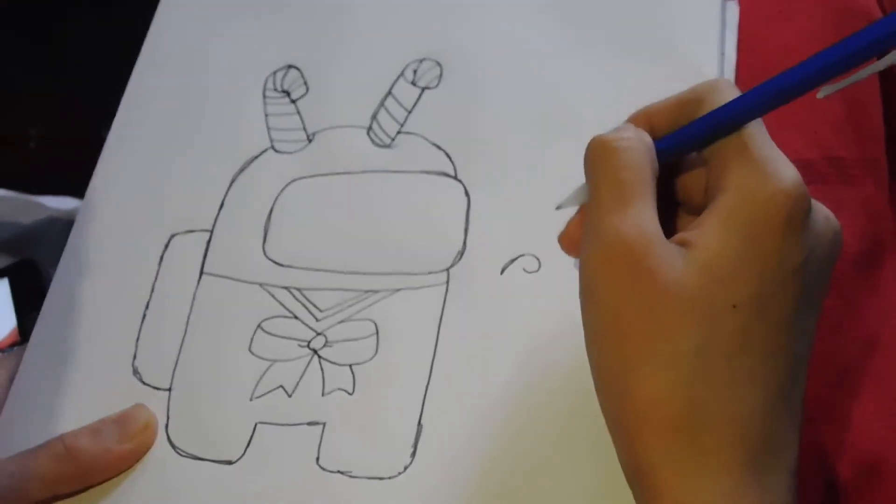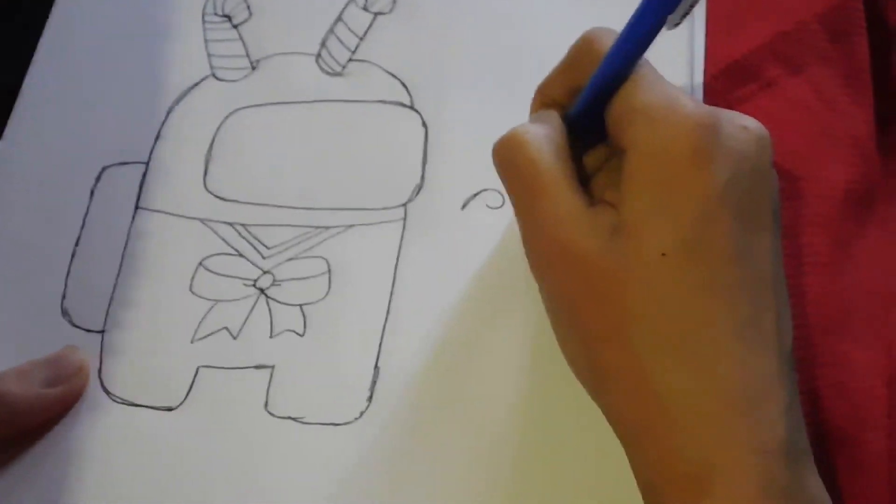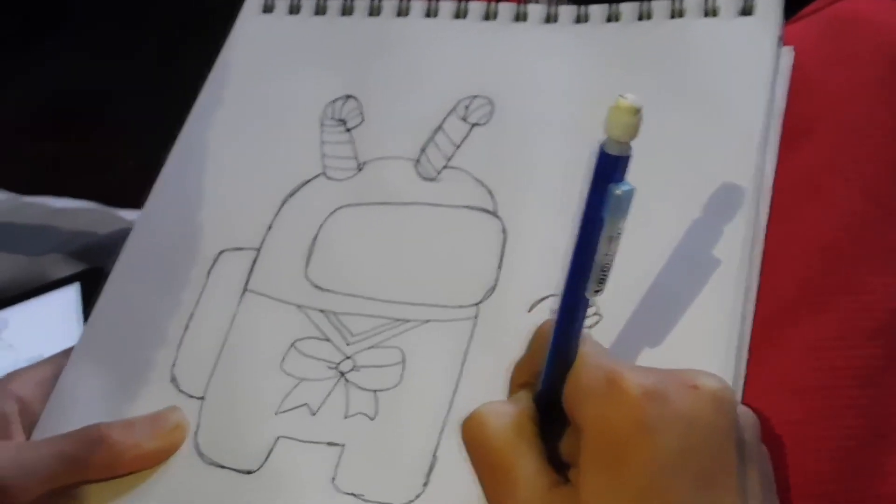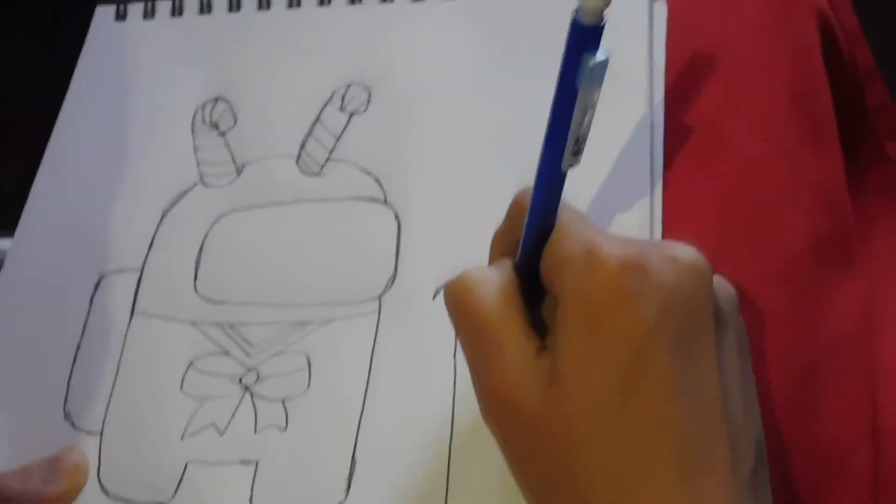I don't know why the arms of Among Us are not attached. Damn, I drew that thumb big. This candy cane is going to be looking bigger than the actual body.